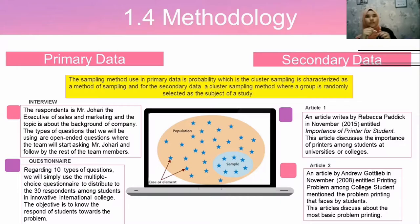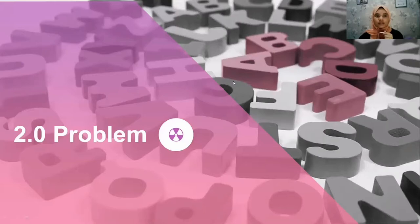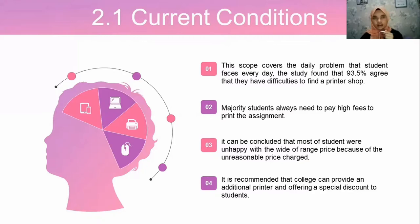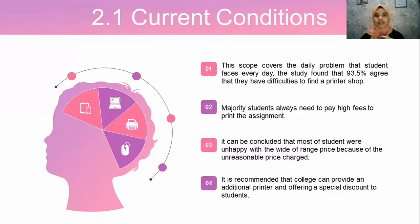Moving to section 2.0, the problems. Section 2.1, current condition: this scope covers the daily problems students face. We found that 93.5% agree they have difficulties finding a printer shop, and the majority always have to pay high fees to print assignments. We conclude that most IIC students are unhappy with the unreasonable prices charged for their printing needs.